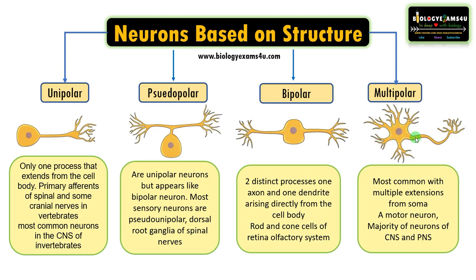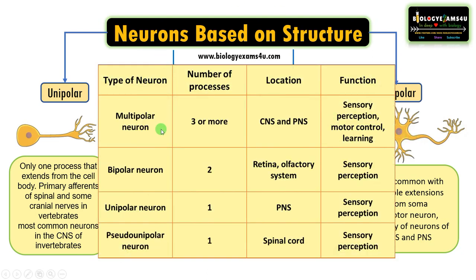These are the four types of neurons based on structure. To summarize: multipolar neurons have three or more processes, are located in both the CNS and peripheral nervous system, and function in sensory perception, motor control, and learning. Bipolar neurons have two processes, are located in the retina and olfactory system, and their major function is sensory perception. Unipolar neurons have a single process, are primarily in the peripheral nervous system, and are involved in sensory perception. Finally, pseudo-unipolar neurons appear like bipolar neurons but function as unipolar; they are located in the spinal cord and their major function is sensory perception.